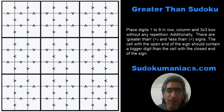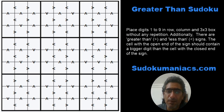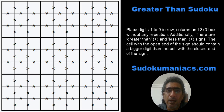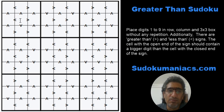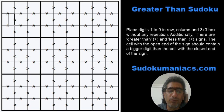Coming back to Sudoku, this puzzle was posted on our website two days back, that is the 17th of November. This is a Greater Than Sudoku. The rules of classic Sudoku apply — no digit can repeat in a row, column, or a three-by-three box. Additionally, instead of digits being given as clues, you will find the less-than and greater-than symbols marked on the grid. These symbols show the relationship between the digits in adjoining cells, just like mathematically the greater-than sign indicates one cell will have a greater number than the other.